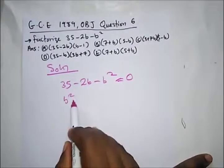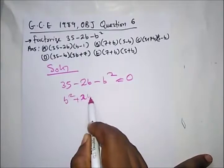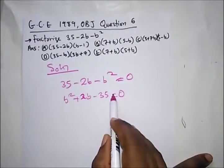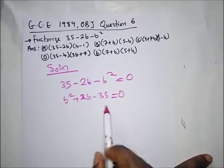Taking this here we have plus 2b, then minus 35 equal to zero. Remember from my introduction of factorization, our two factors have to, the product has to be 35.